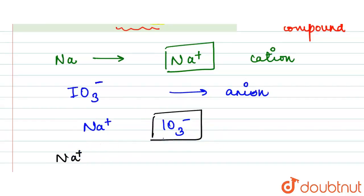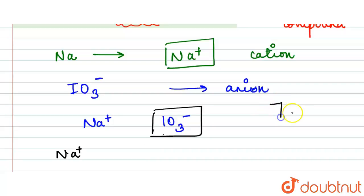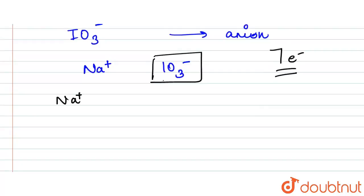And if we see for the IO3 minus, now we know iodine have the seven electrons. So here what we will have is iodine will form double bond with the two oxygens and here we will have the single bond, here we will have O minus. This is the structure for the IO3 minus.